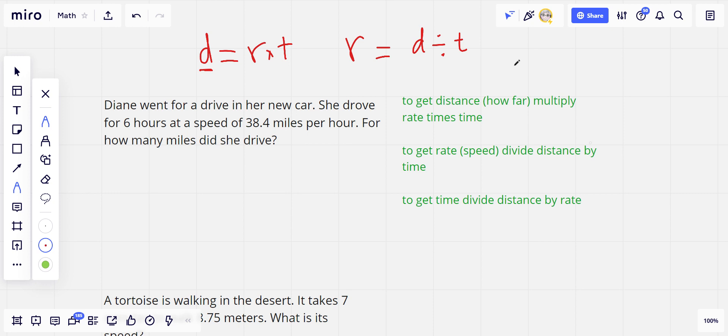And you can also use it to find the time, and the time is going to be the distance divided by the rate. So those are three versions of the same formula that you're going to be using. Let's see what this first one says.